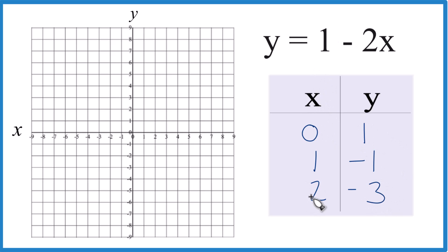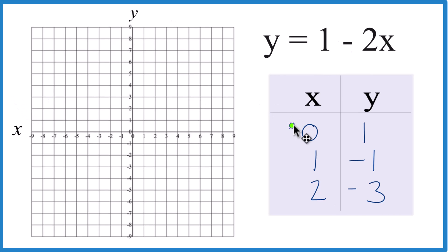And again, you could put any values in for x, you get a value for y, and it'll be on our line. So x is zero, y is one.